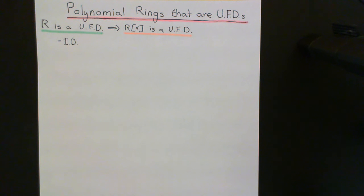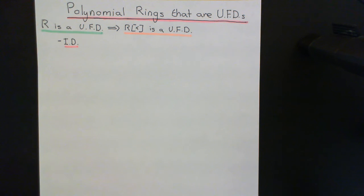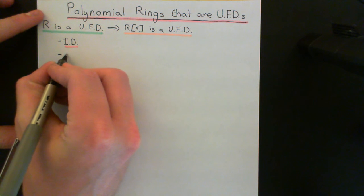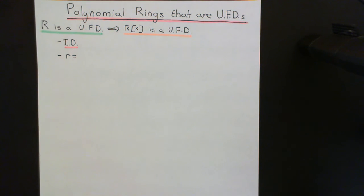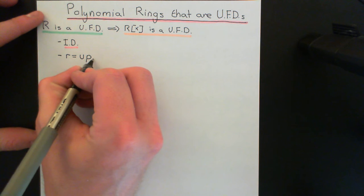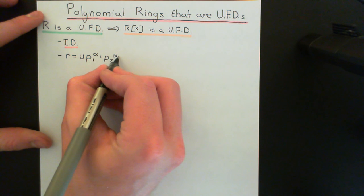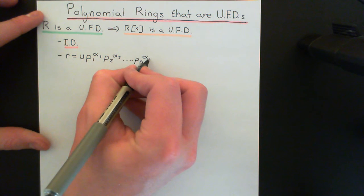In an integral domain, the only way of multiplying two elements together and getting zero as the answer is if one or both of the elements you're multiplying together is already zero. So you start off with an integral domain — one of these special non-zero commutative rings — and then on top of that we want another property: all elements in the unique factorization domain, apart from the additive identity, must be possible to factorize into a product of irreducibles with a unit out the front.